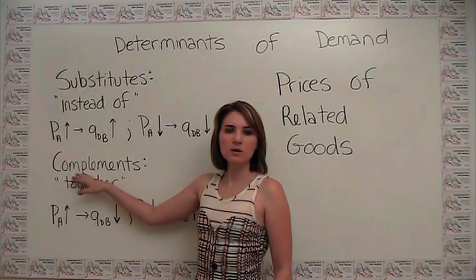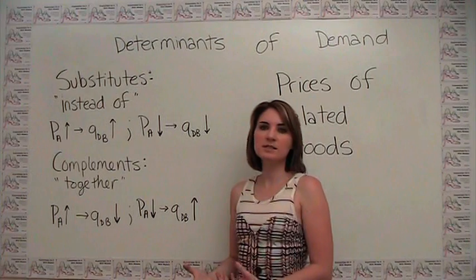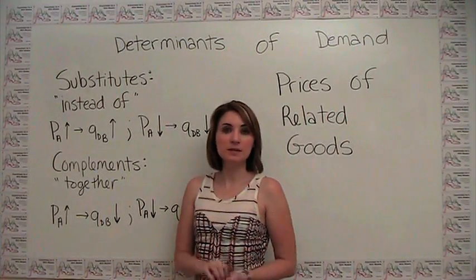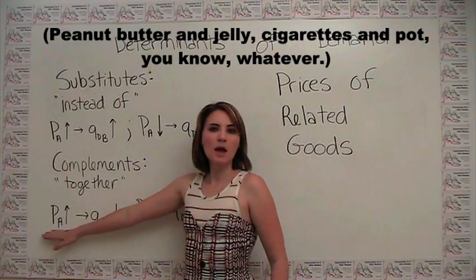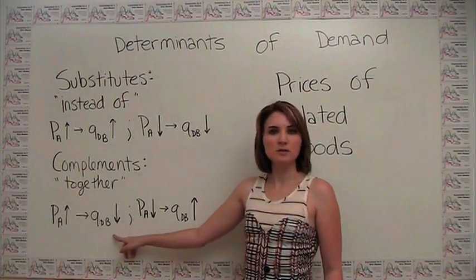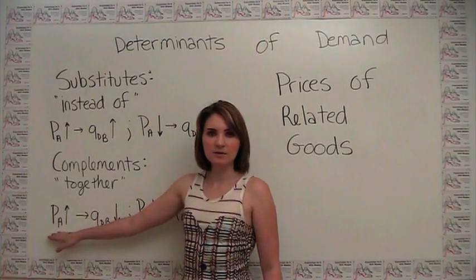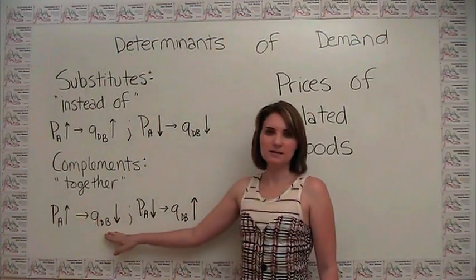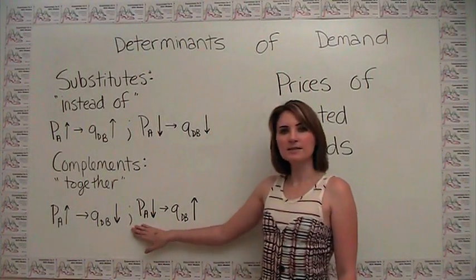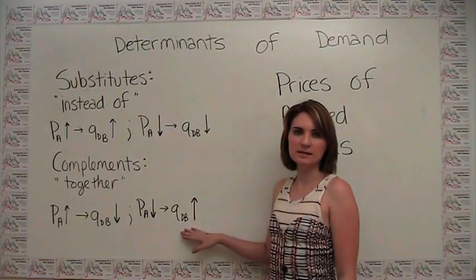Complementary goods are things consumed together, such as DVDs and DVD players, iPods and MP3s. As one good gets more expensive, the demand for the other actually goes down. For example, if DVD players get more expensive, the demand for DVDs decreases. Conversely, as DVD players get less expensive, the quantity demanded of DVDs increases.